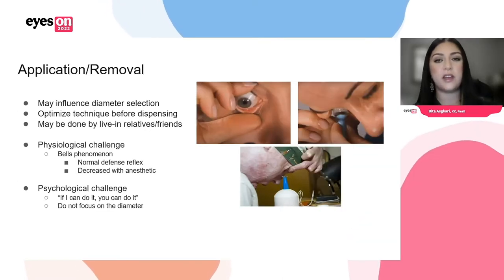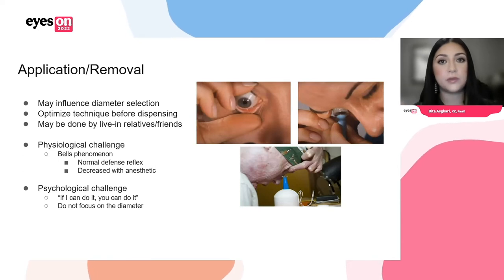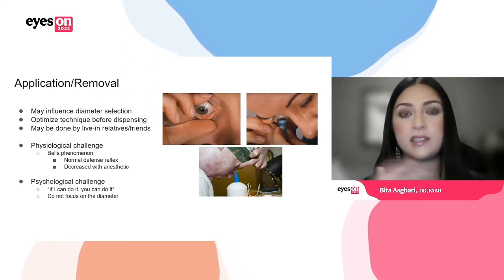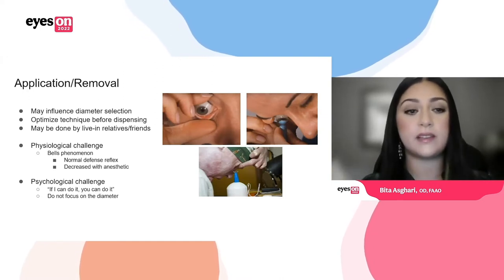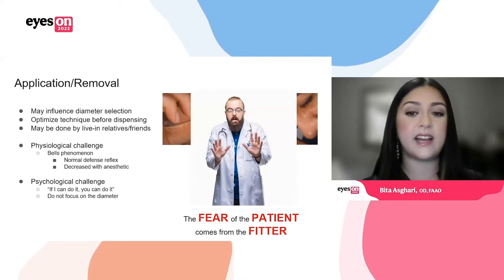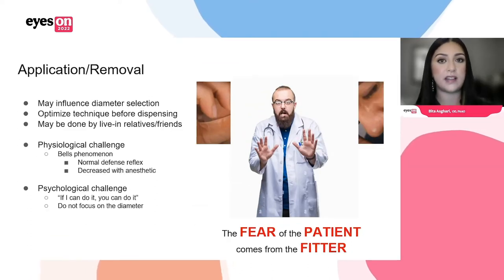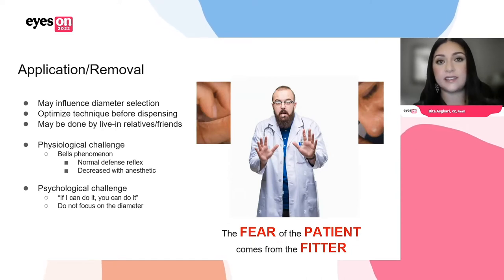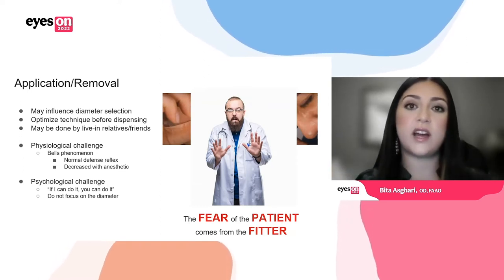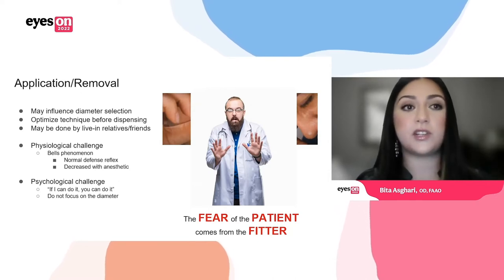Then there's a psychological challenge: 'I can't get this lens on my eye — this big piece of plastic is coming at me.' I tell patients, listen, if I can do it, you can do it. I'm very careful not to focus on the diameter of the lens. None of my patients ever ask me what size I'm putting on their eye — they just learn to apply and remove and don't question it because I don't focus on it. The fear of the patient comes from the fitter. If you're afraid in applying and removing, if your hands are shaky, if you're saying 'I don't know if I can get this lens in your eye,' patients absorb all of this. So just be mindful to apply and remove with confidence. If you're having challenges, try a drop of anesthetic to help improve the application technique — it really does boost the patient's confidence.